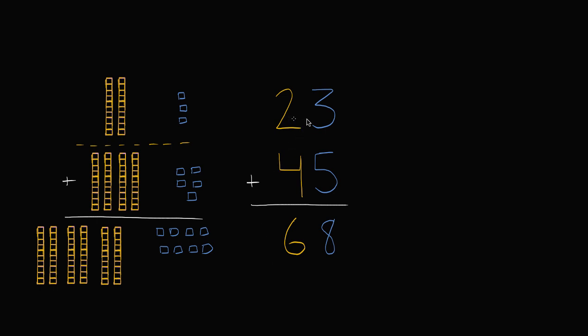So just like that, when I add 23 to 45, I added the ones place—three plus five is eight. Three ones plus five ones is eight ones. And I added the tens place—two tens plus four tens equals six tens. So I got 68.